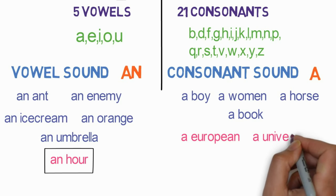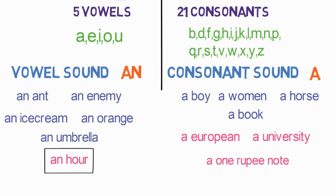Let's look at words that start with a vowel letter but have a consonant sound at the beginning: a European, a university, a one-rupee note. These all start with a consonant sound, so 'a' is used before these words.